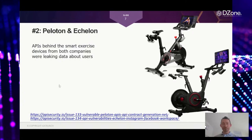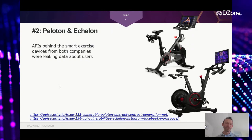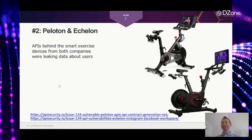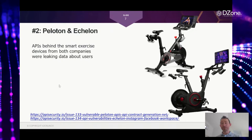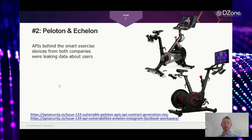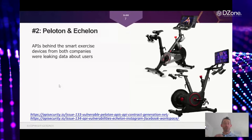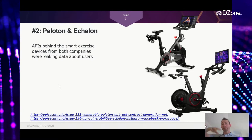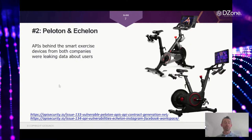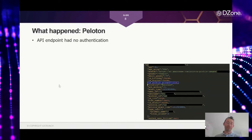Next up are Peloton and Echelon — both had API vulnerabilities. When President Biden was elected, the Secret Service didn't let him bring his Peloton exercise equipment into the White House citing security concerns, and it turned out both Peloton and their main competitor Echelon were vulnerable. These are smart connected devices: when you exercise you get a social experience with your coach and other users, which means device applications talk to cloud components. Unfortunately, APIs in both systems were vulnerable.